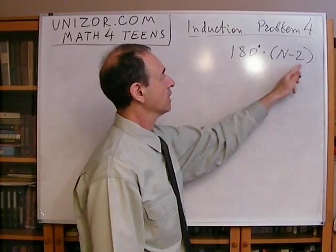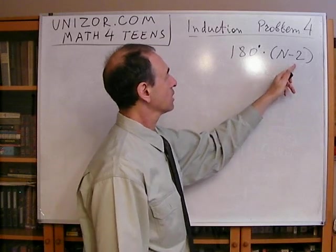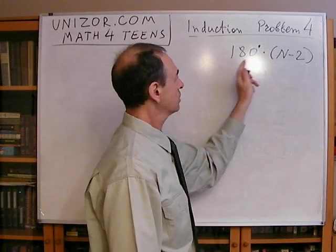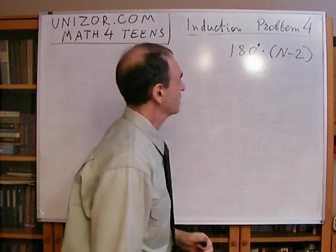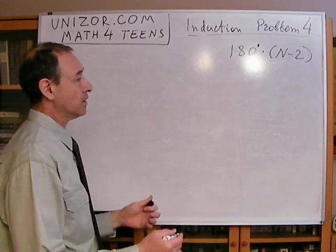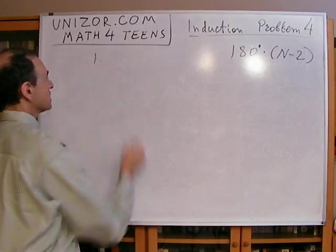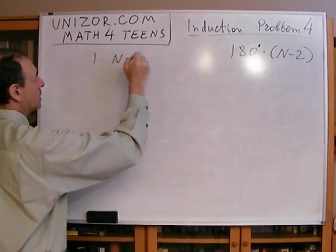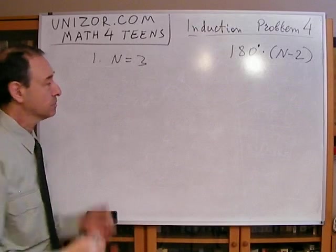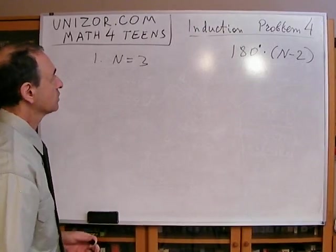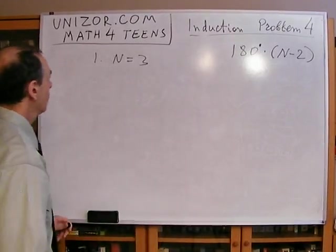For 3, it's 180. 3 minus 2 is 1. For 4, it will be 4 minus 2 times 180, which is 360. So this is the formula. And how do I prove it? Well, again, number one step: for n equals 3, we have already proved it, we know it, it's school math, it's 180, formula's holding fine.